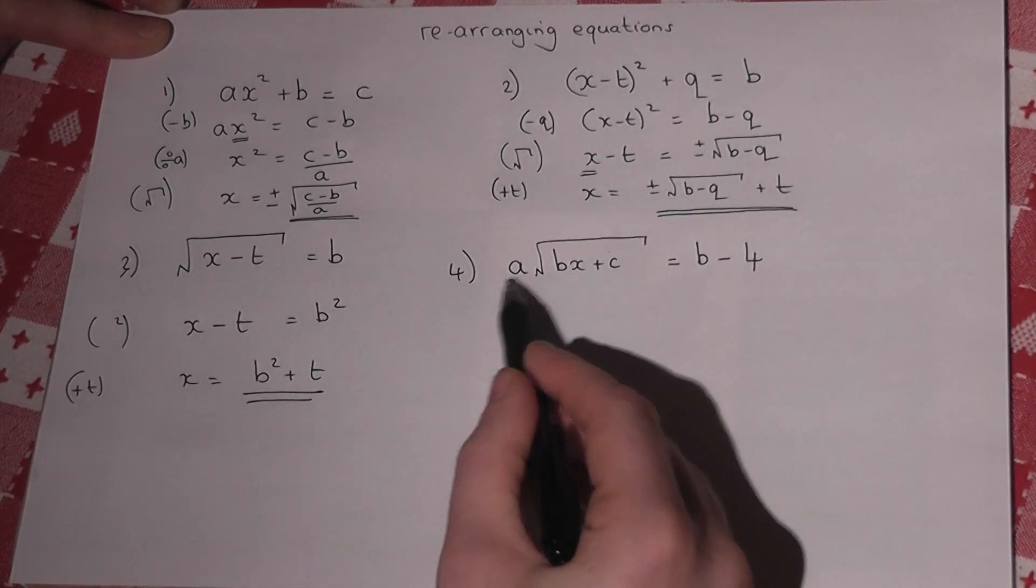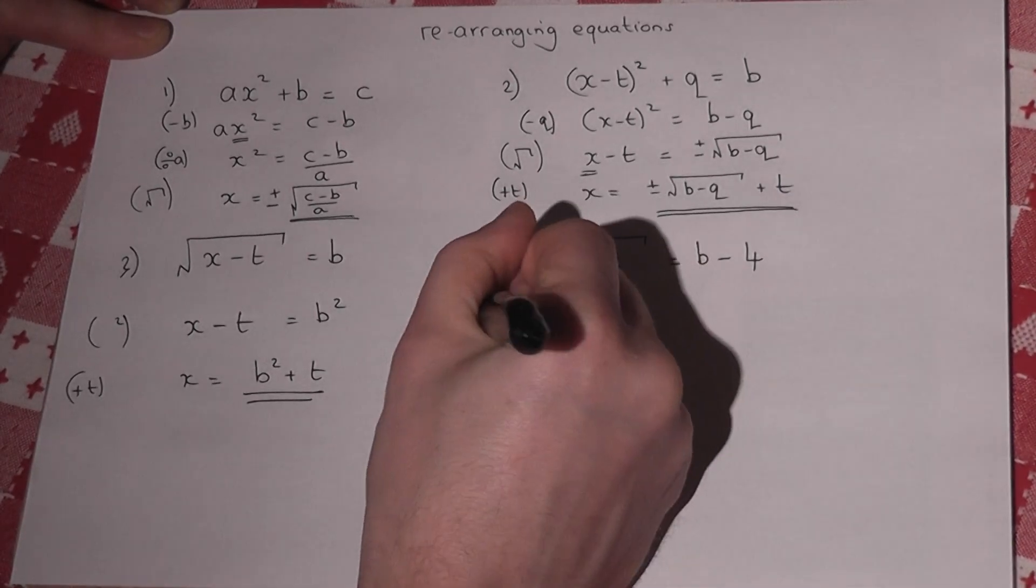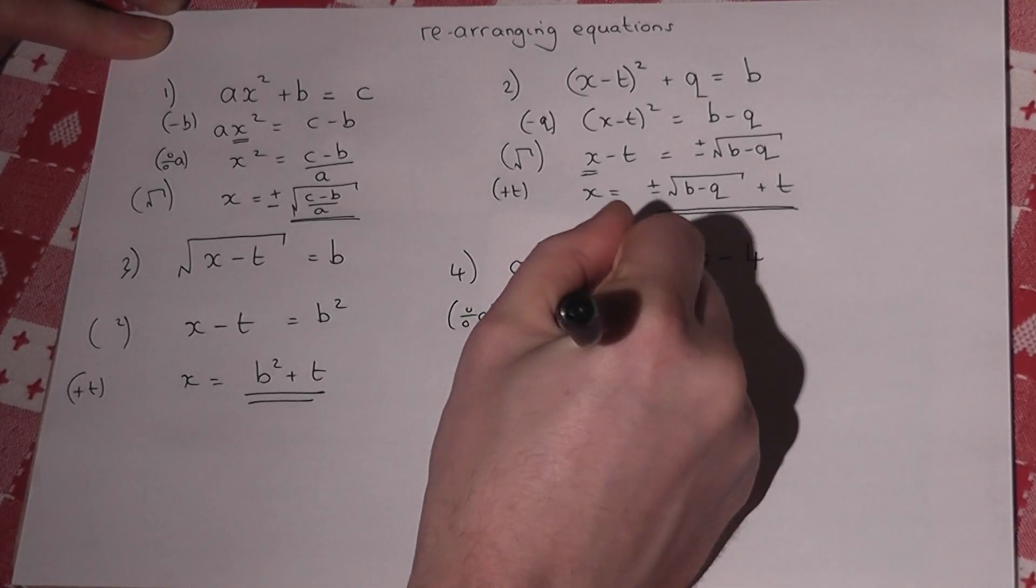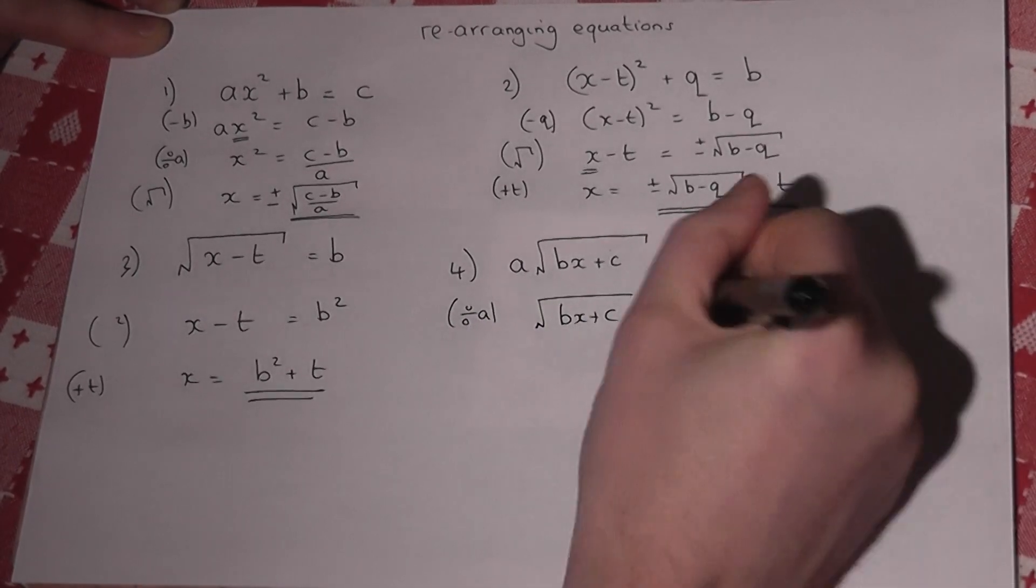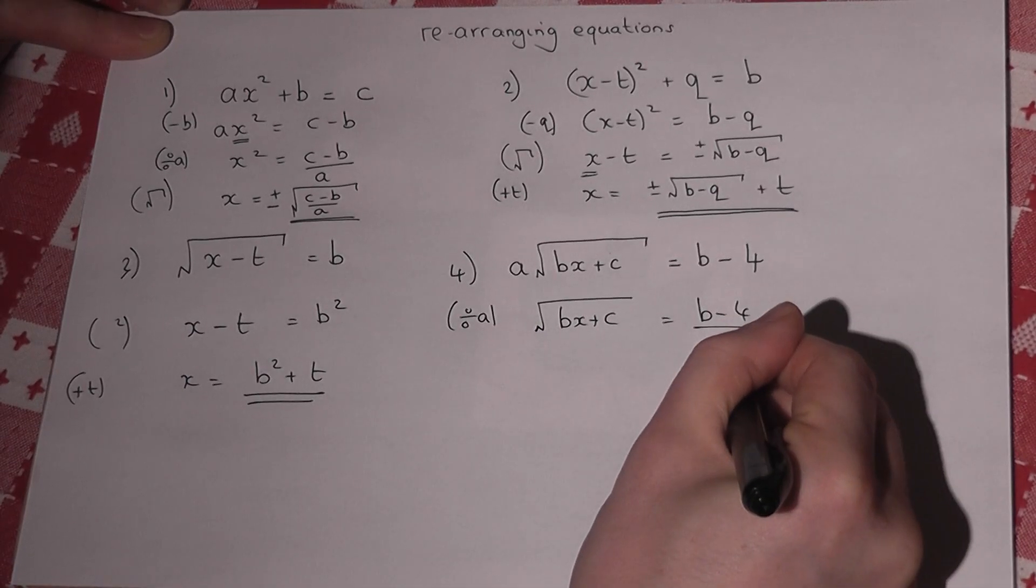So we're not quite there with the fourth one. There's an a adjacent to the square root. So I begin by dividing by a. So I'm left with the square root of bx plus c is equal to b minus 4, all over a.